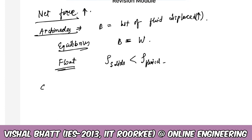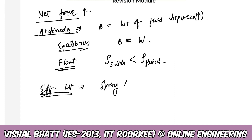On this slide, we have the ability to calculate the objective weight, which we measure through the balance. The effective weight W-dash is given as the actual weight minus the buoyant force acting on it.